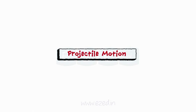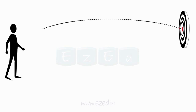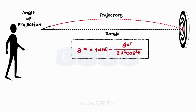Projectile motion is also a curvilinear motion. A man playing darts has to hit the target at the center. To do that, he has to throw the dart in a direction that follows a curved path and hits the target — this curved motion is also known as projectile motion. The path traced by a projectile is called the trajectory, and the angle at which a projectile is thrown into space is called the angle of projection. The minimum distance between the point of projection and the point where the projectile strikes is called the range.